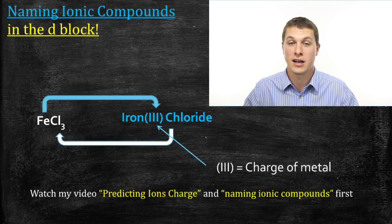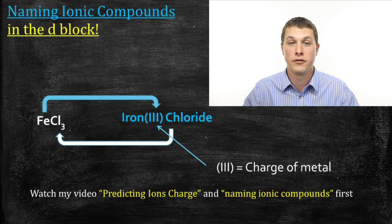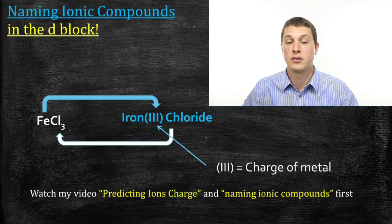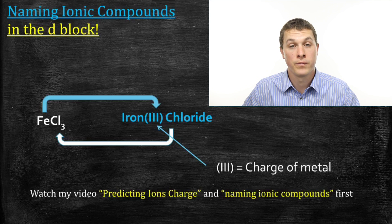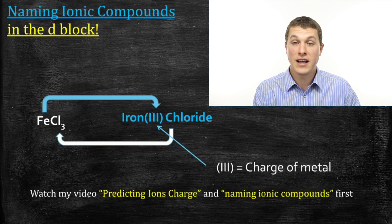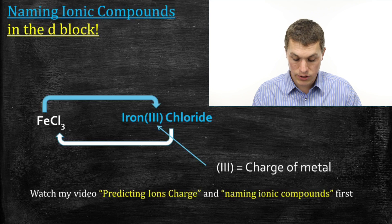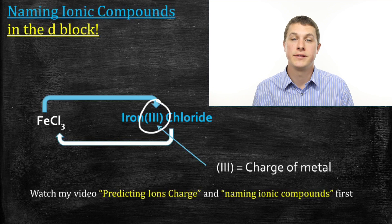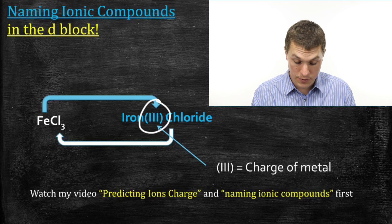In the last video, we didn't have any ionic compounds with metals from the D block. The D block is just that central part of the periodic table. The reason that changes the naming is because, recall that in our naming process in the previous video, a critical step was being able to predict the charge of our metal. And it turns out that in the D block, we can't predict the charge of our metal. So instead, what we do is we specify it in our name. And that's why you see iron 3 chloride with those Roman numerals there — that Roman numeral is telling us the charge on iron.